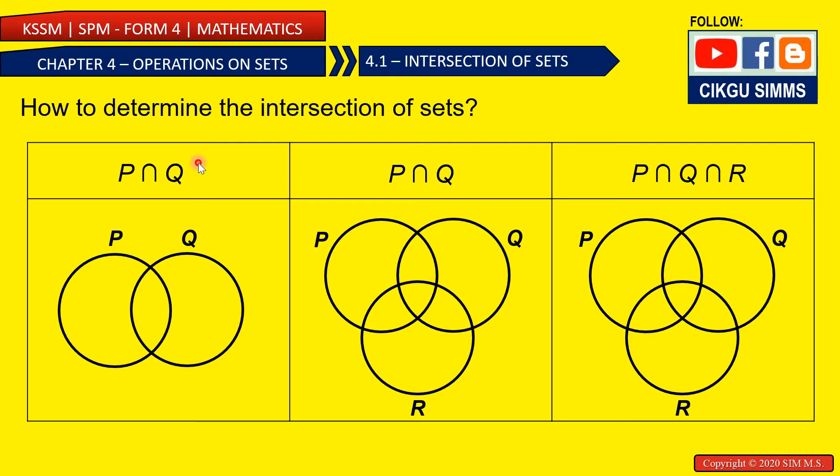So the first is the P and Q. So P and Q is the middle part, right? The intersection of P and Q. How about we have three sets? P, Q, and R. So for P and Q, also same. P and Q is this part.